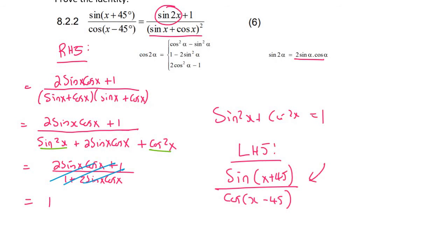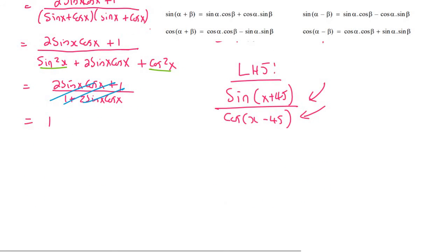Now this is a compound angle and we also have a compound angle at the bottom. The first one is sin x plus 45, so that's going to become sin x cos 45 plus cos x sin 45.